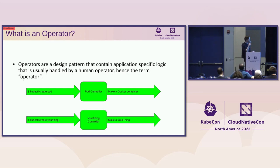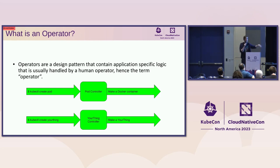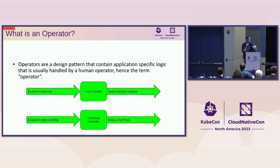The simplest possible example, if you're familiar with Kubernetes: you've probably done something like 'kubectl create pod'. The way that actually happens is that behind the scenes there's a process called the pod controller that sees when you create that pod and then actually makes that pod happen — actually makes a Docker container come into existence on a machine in the cluster. We're just going to replicate that control flow, so you can say 'kubectl create your-thing' and there will be a your-thing controller that goes and makes that happen.